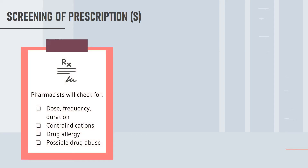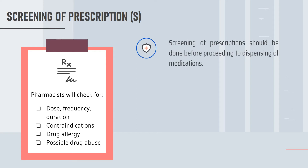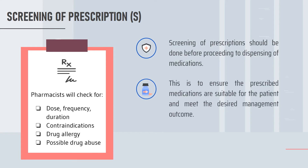The first essential service to be discussed is the screening of prescriptions. When a patient comes to the pharmacy with a doctor's prescription, pharmacists will first check for the dose, frequency, duration, contraindications, patient drug allergy, and possible drug abuse. This should be done before dispensing of medications to ensure the prescribed medications are suitable for the patient and meet the desired management outcome.